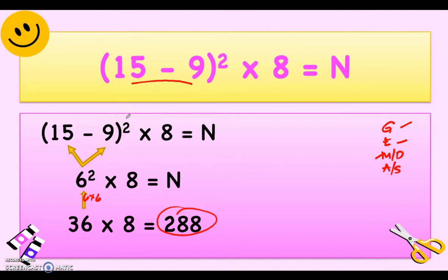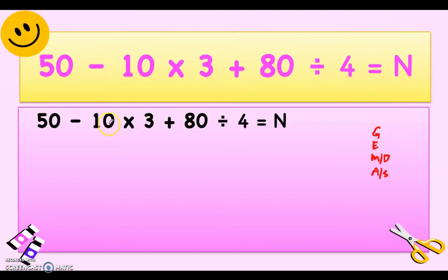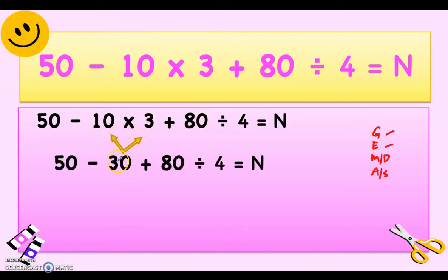Next: 50 minus 10 times 3 plus 80 divided by 4 equals n. Following the GEMDAS rule — there is no grouping symbol and no exponent — so we proceed to multiplication or division. Multiplication comes before division, so we multiply first: 10 times 3 is 30. Copy the rest: 50 minus 30 plus 80 divided by 4 equals n.